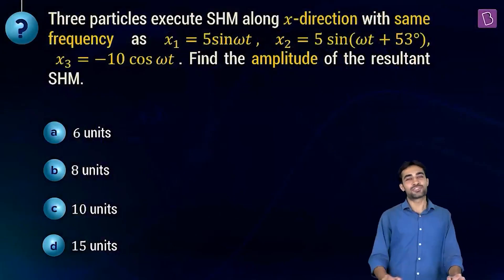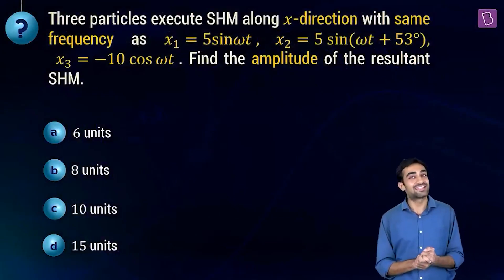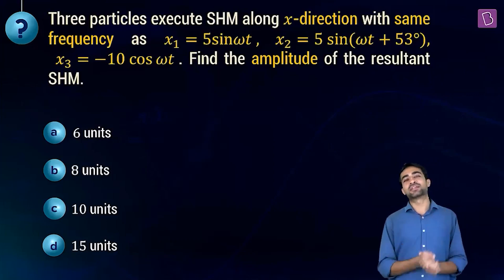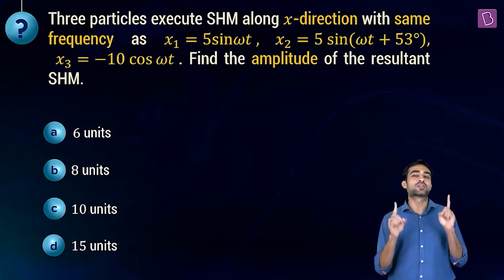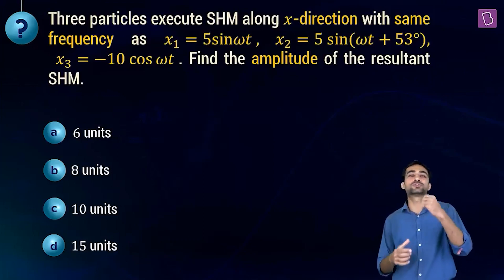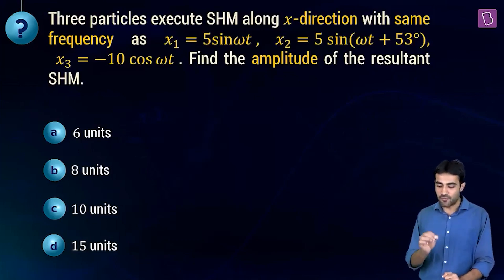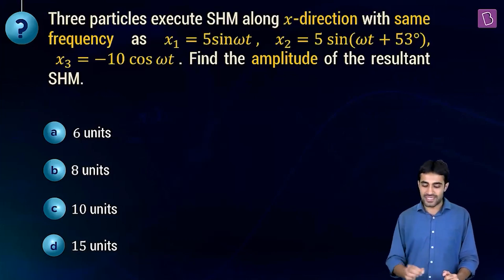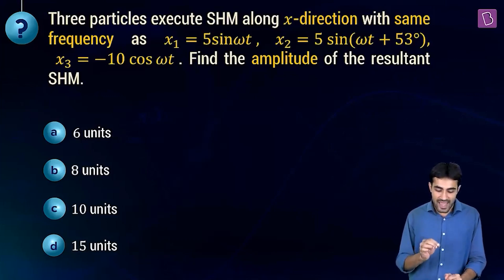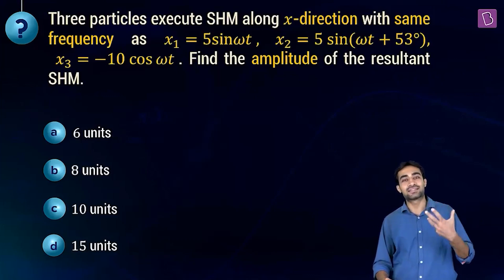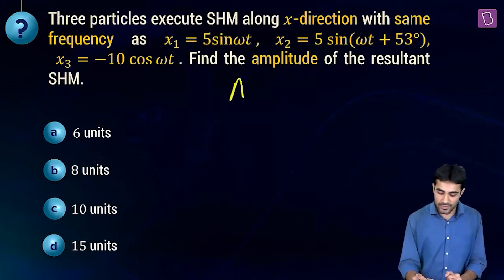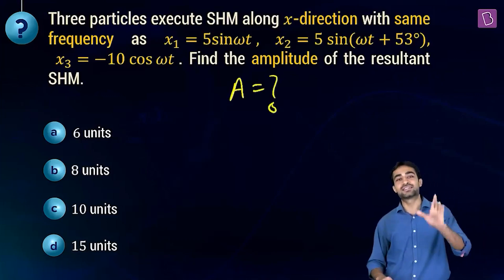Next is a question on superimposition of SHM. Three particles execute SHM along the X direction with the same frequency — so all SHMs are along X-axis with the same angular frequency. X1 = 5·sin(ωt), X2 = 5·sin(ωt + 53°), X3 = −10·cos(ωt). Find the amplitude of the resultant SHM.